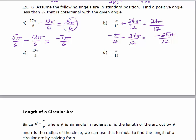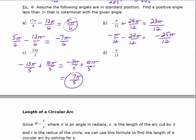Pause the video and do the same for parts C and D — find one positive coterminal less than 2π and one negative coterminal. For negative 13π/5, add 2π, which is 10π/5: negative 13π/5 plus 10π/5 gives negative 3π/5 — that's the negative coterminal. Adding 10π/5 again gives 7π/5, which is the positive coterminal. Both are coterminal with negative 13π/5 and with each other.